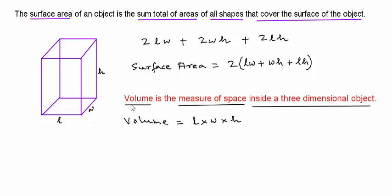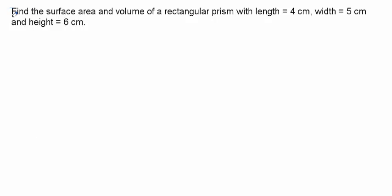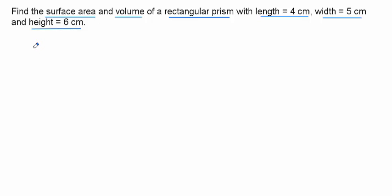Let's do a few problems. Find the surface area and volume of a rectangular prism with length 4cm, width 5cm, and height 6cm. It's pretty much a straightforward application of the surface area and the volume formula for a rectangular prism.